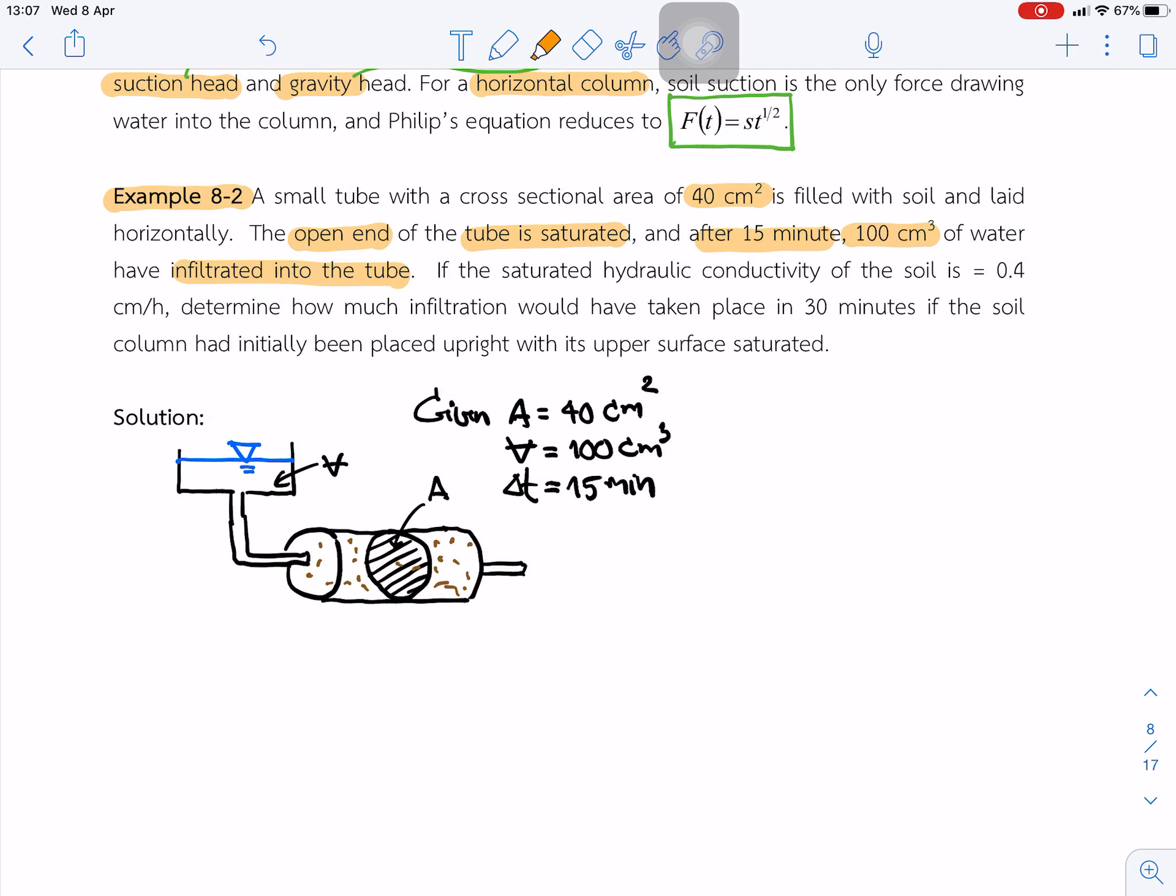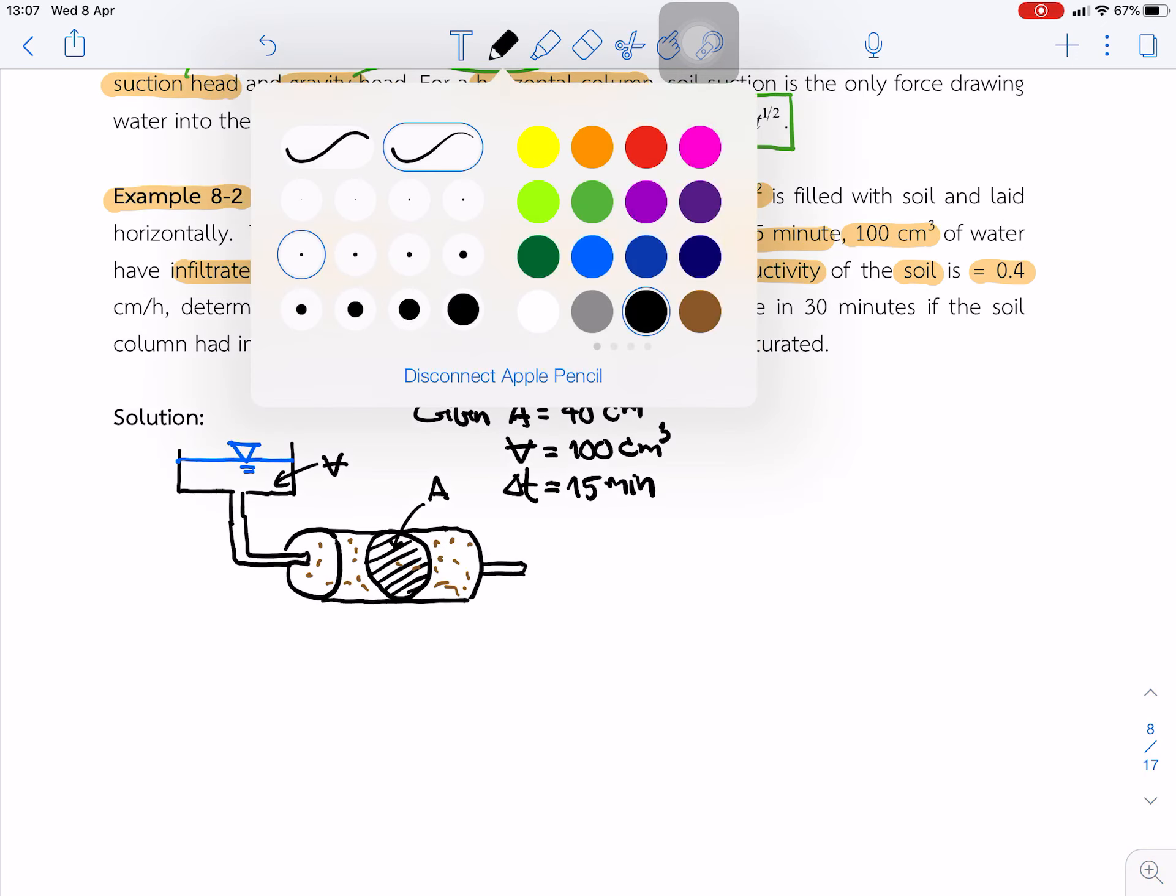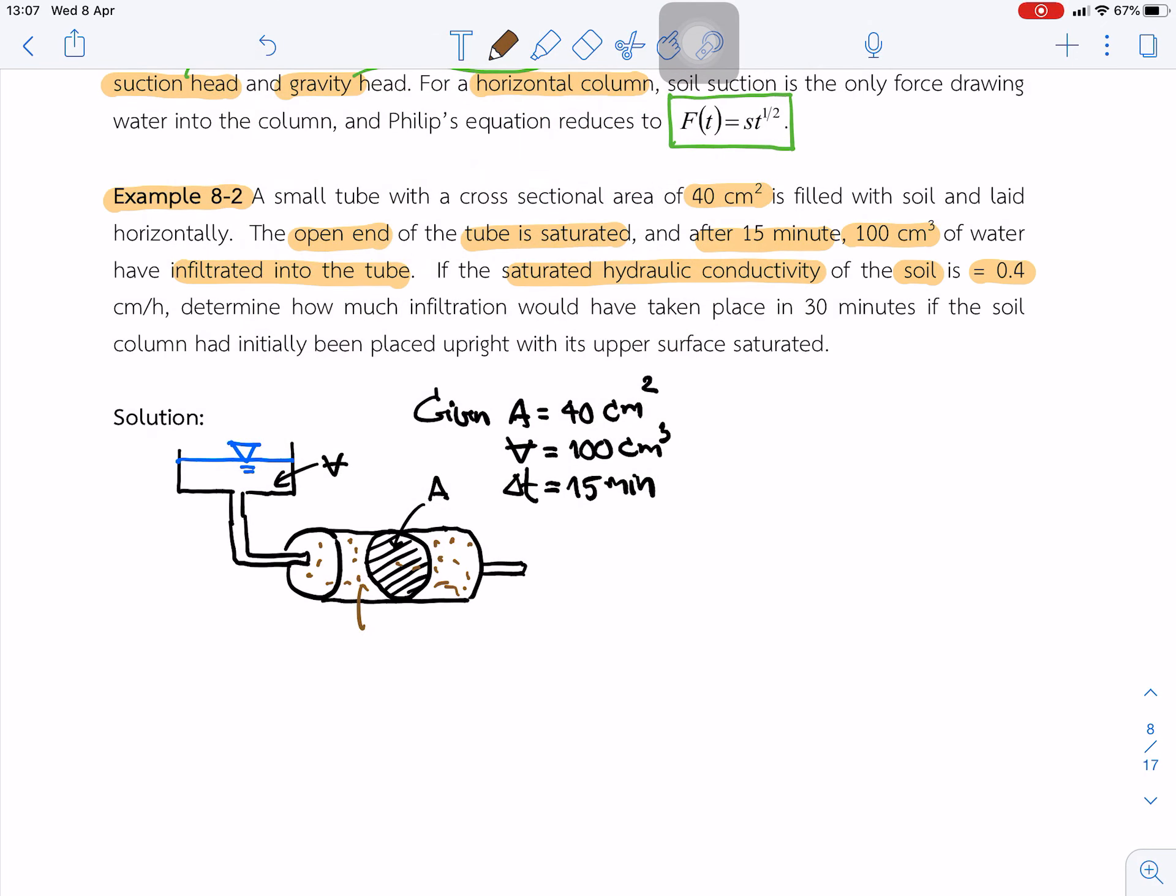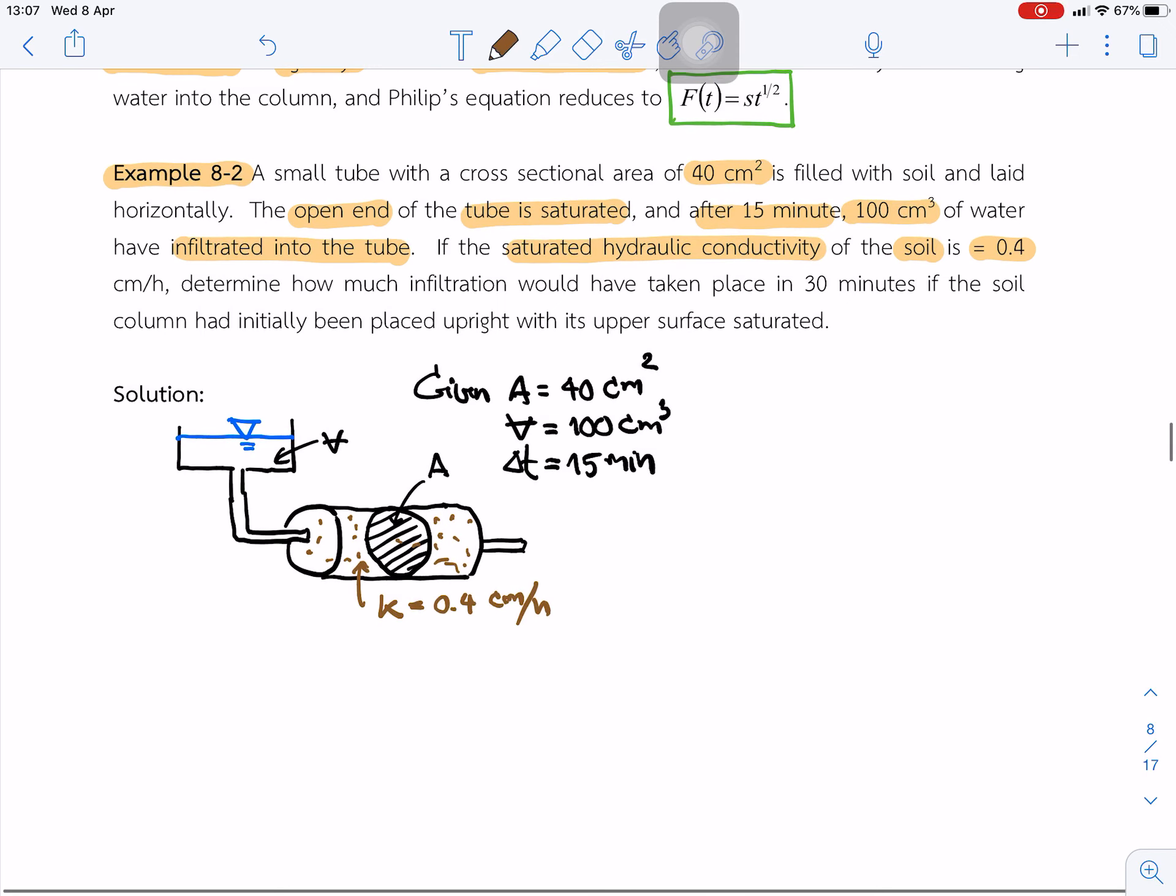Given the saturated hydraulic conductivity of the soil is 0.4 cm/h, determine how much infiltration would have taken place in 30 minutes if the soil column has been placed upright with the upper surface saturated.